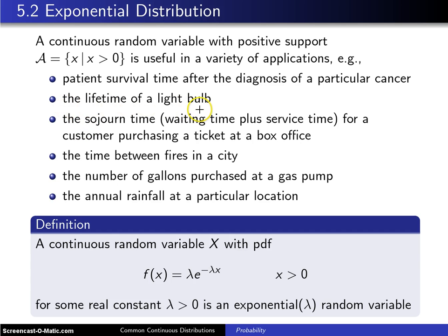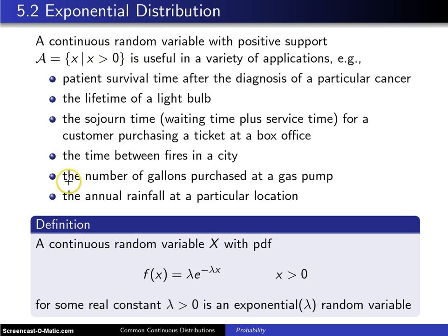How about the lifetime of a lightbulb? The lifetime of a lightbulb cannot be negative, so positive support is reasonable. The sojourn time — waiting time plus service time for a customer purchasing a ticket at a box office — is also positive. The time between fires in a city is positive. The number of gallons purchased at a gas pump can't be negative. The annual rainfall at a particular location also has positive support. These six examples show there are plenty of practical situations involving a positive random variable.